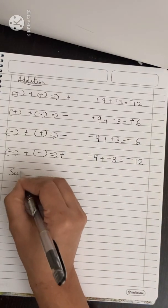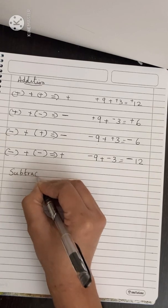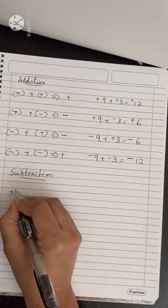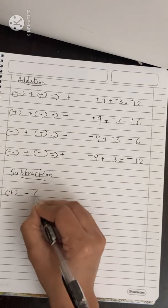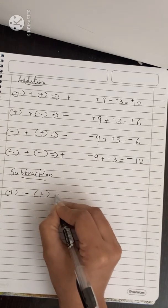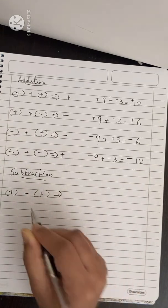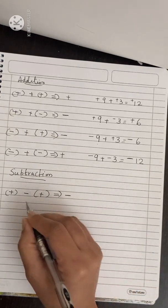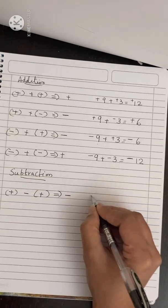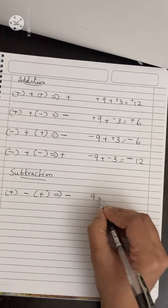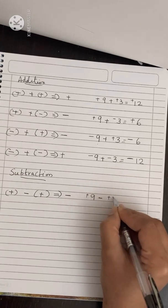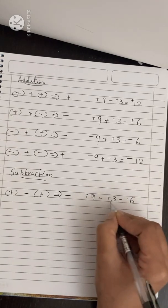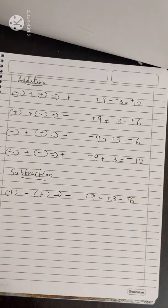Now let us see how it works for subtraction. Plus minus plus — you have to subtract and put the sign. For example, plus 9 minus plus 3, which equals 6. Both numbers are positive, so it will come positive.